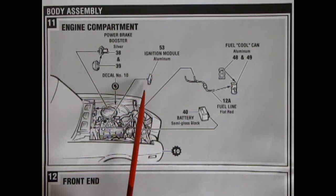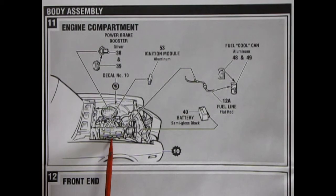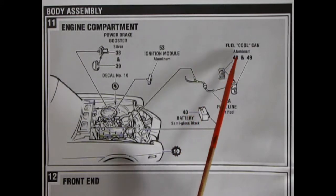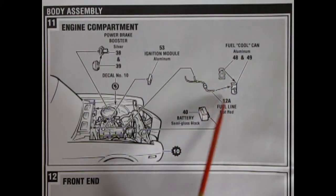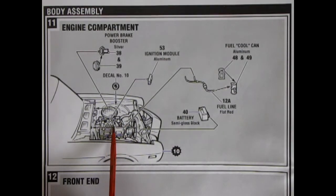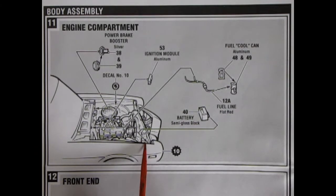There's an ignition module. It's aluminum. Plugs in here. Oh! Yeah! Down here, on the valve cover, it looks like. I don't know if that's quite right, but anyway. A fuel cool can going together, and a fuel line, and everything popping in to the side of the carburetor. And the battery goes in here on the firewall.